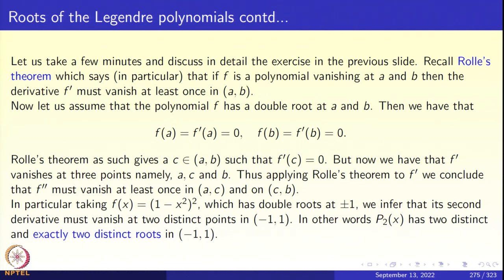What does Rolle's theorem say? It is true for any continuously differentiable function, but for us it will be a polynomial. If a polynomial vanishes at a and b, then the derivative must vanish at least once in the open interval (a, b). Now suppose the polynomial f has a double root at a and a double root at b. That means not only f(a) = 0 and f(b) = 0, but also f'(a) = 0 and f'(b) = 0.